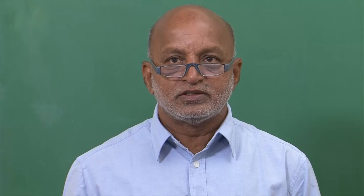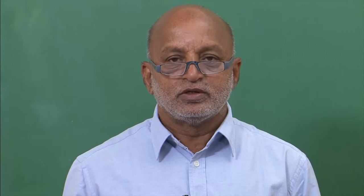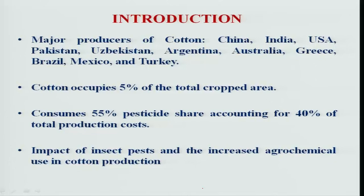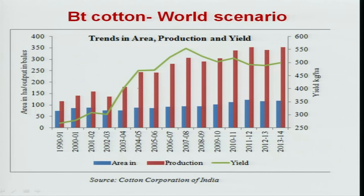Cotton is called the king of fibers. It is grown throughout the globe, occupies 5% of total cropped area, and India stands first in area and second in production. Globally, cotton is grown as BT cotton. This graph shows how cotton is grown and how much production and yield is obtained in different areas.